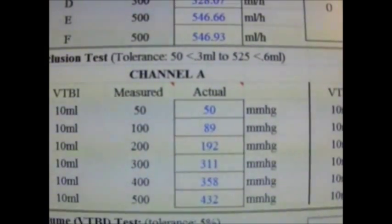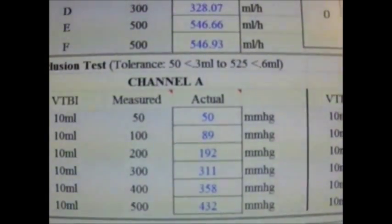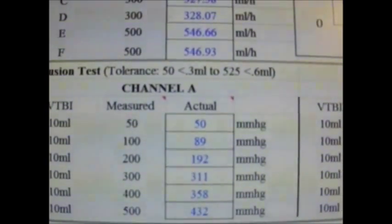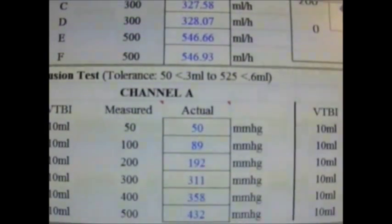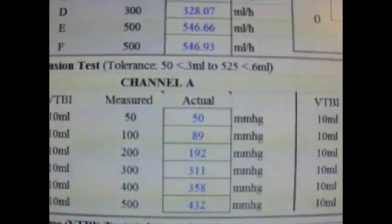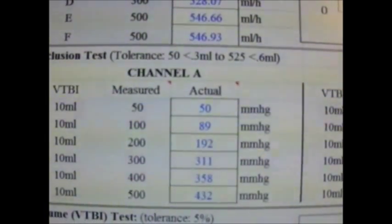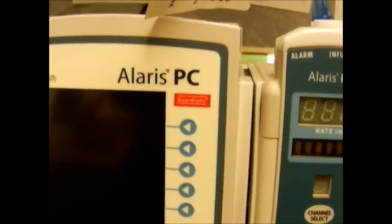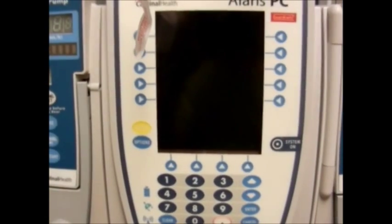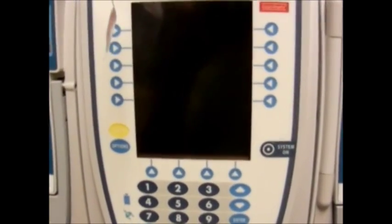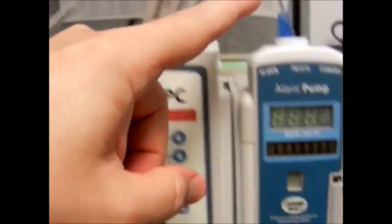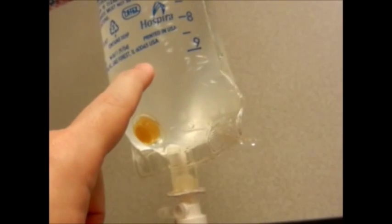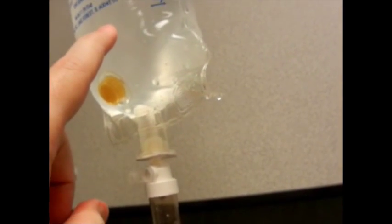You will also hear terms such as upstream and downstream occlusion. Upstream occlusion, or the fluid side occlusion, is an obstruction between the stream of origin, or the IV bag, to the IV pump. Here is our infusion pump, and from the top, followed up to the bag, is our upstream occlusion, or fluid side occlusion.